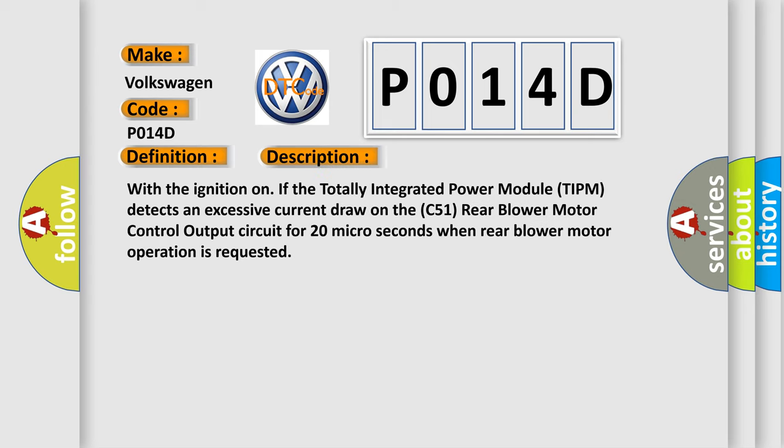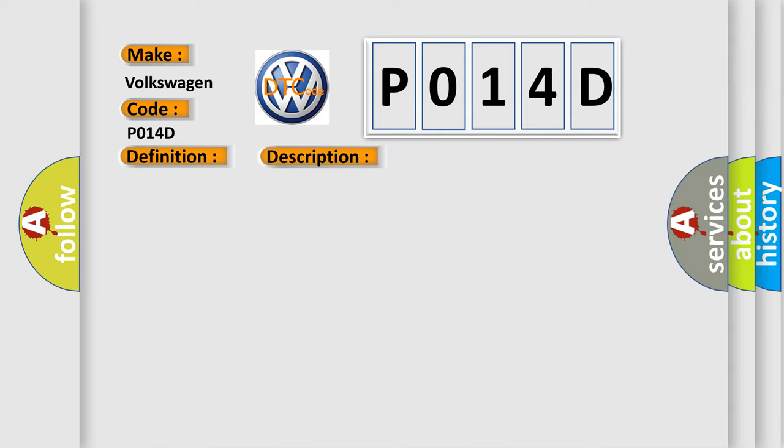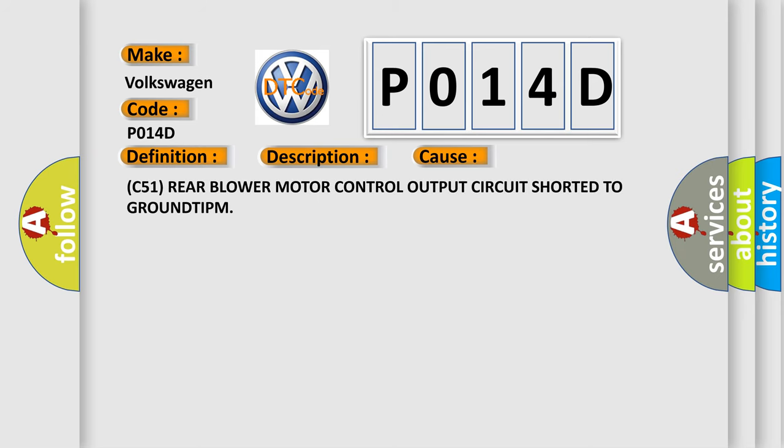With the ignition on, if the totally integrated power module TIPM detects an excessive current draw on the C51 rear blower motor control output circuit for 20 microseconds when rear blower motor operation is requested. This diagnostic error occurs most often in these cases: C51 rear blower motor control output circuit shorted to ground TIPM.